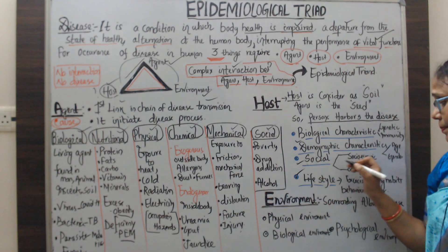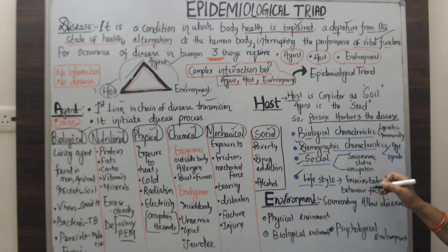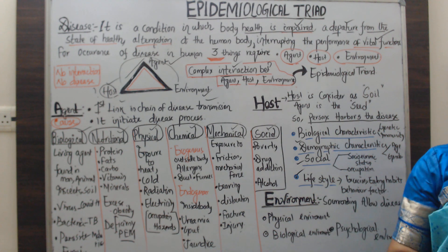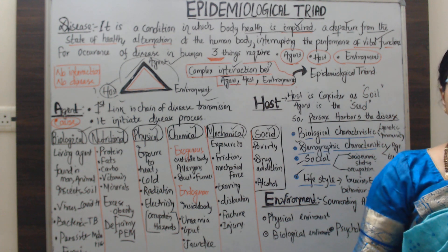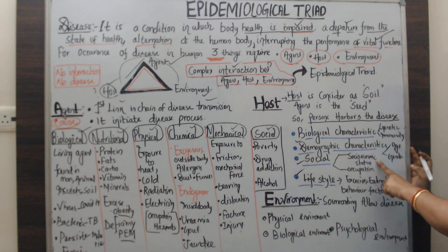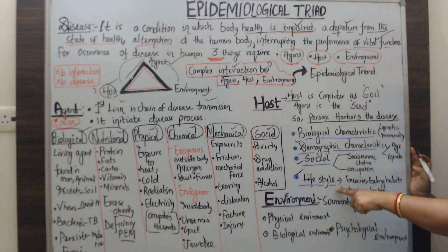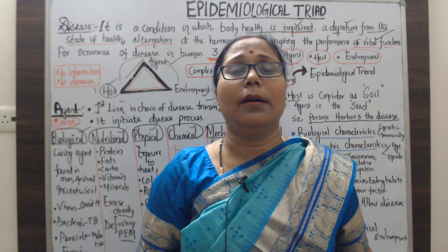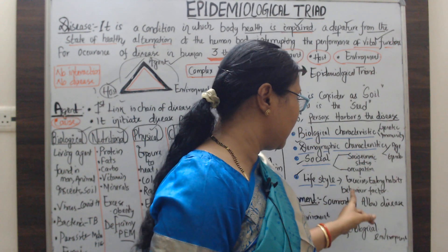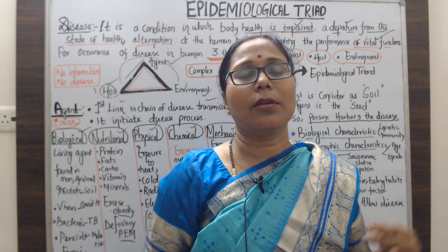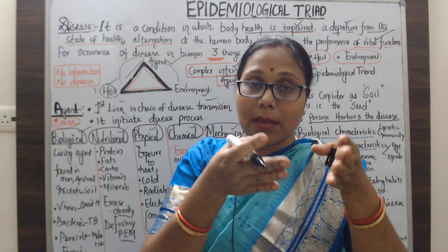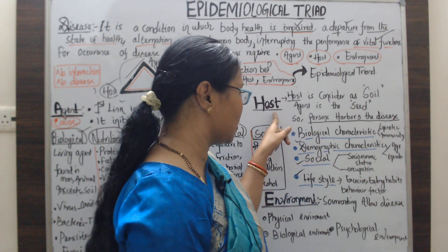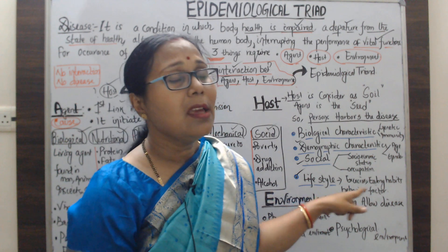Social characteristics include socioeconomic status and occupation. Working in agriculture, cotton factories, or other industries affects health. A good economic level allows a person to afford things needed for good health. Lifestyle is also important — behavioral habits like smoking, taking alcohol, poor eating habits, and lack of exercise within the host contribute to disease occurrence. These are the characteristics of the host.